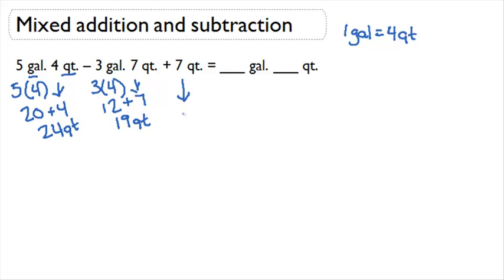And then finally we can just bring down our 7 because it's already in quarts. So here we're going to be doing 24 quarts minus 19 quarts plus 7 quarts.